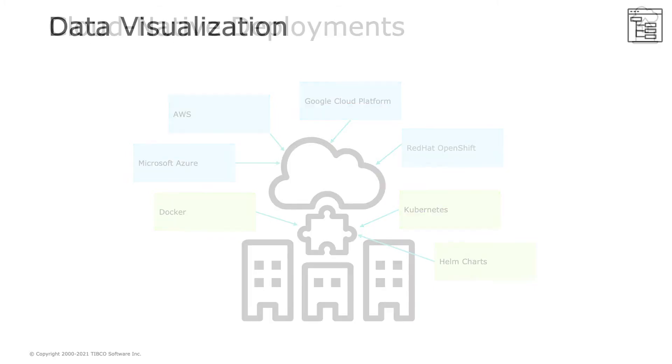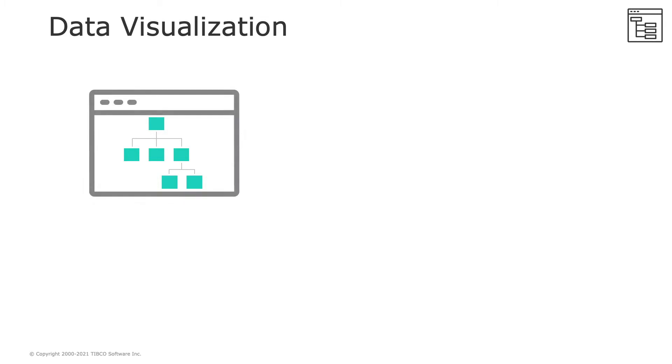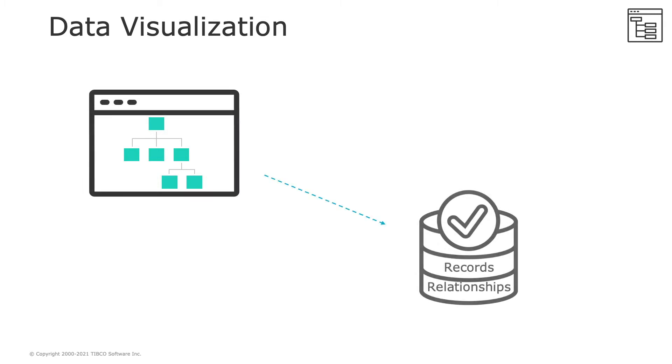Moving on to data visualization with the graphical editor, you can now view the record hierarchy in a tree view and easily manage it with a graphical editor. You can now perform record operations on the graphical record editor.